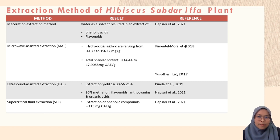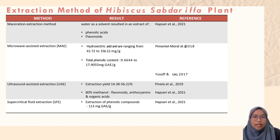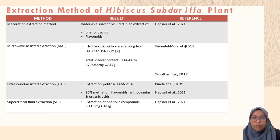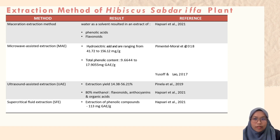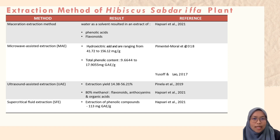The third extraction method is ultrasound-assisted extraction. Based on a previous study from Pinela, the extraction yield was 14.38% to 56.21%. Meanwhile, from Hubsari, when 80% methanol was used as a solvent, it gave results of flavonoids, anthocyanins, and organic acids. The last extraction method is supercritical fluid extraction. According to Hubsari, there was 113 mg GAE per g of phenolic compounds in Roselle extract.